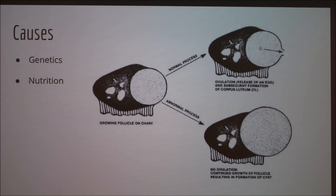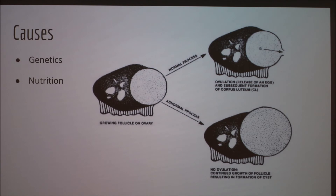Looking at nutrition, there's actually no direct link that shows nutrition will decrease the occurrence of ovarian cysts. But because we are looking at dairy cattle, it's important to note that you do need to have a balanced ration to make sure milk production is adequate.